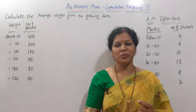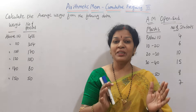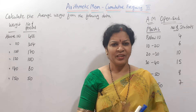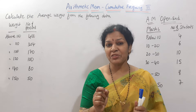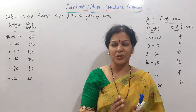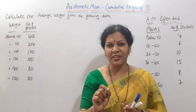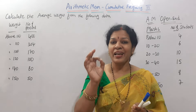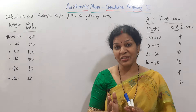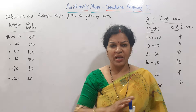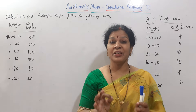Hello dear students, welcome to Devika's Commerce and Management Academy. Today we'll see arithmetic mean when cumulative frequency is given. Last class we saw the same thing but the class interval was given as 'less than 10', 'less than 20', and the frequency was in ascending order. Today we'll see a different method where the class interval is given as 'above 10', 'above 20' — in such cases the frequency will always be in descending order.